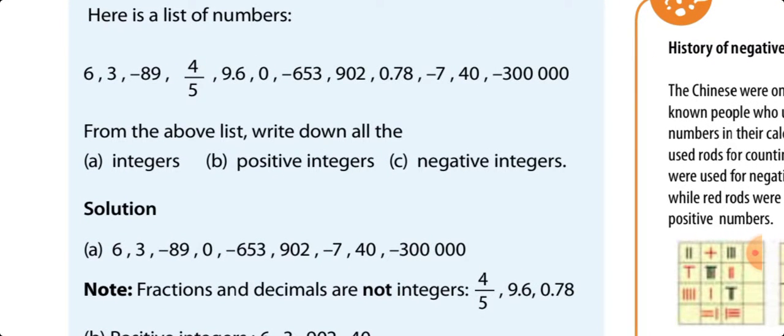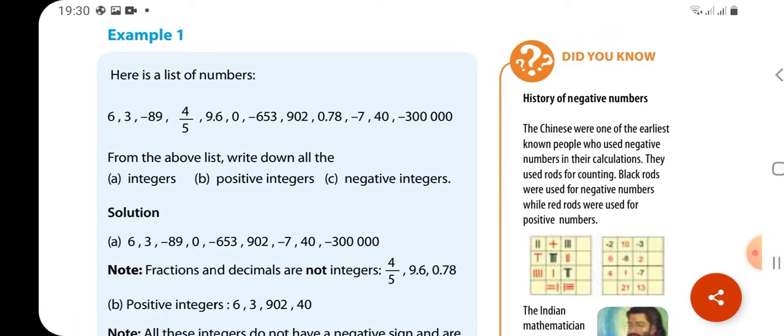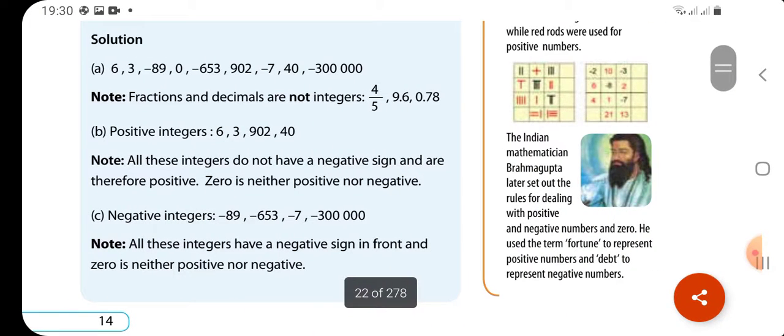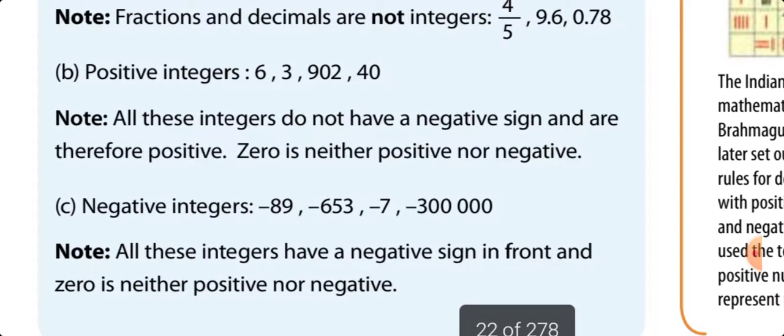The integers are 6, 3. Fractions are not integers. Decimals are not integers. The positive integers are 6, 3, 902, and 40. The negative parts are minus 89, minus 653, minus 7, minus 300,000. All these integers have the negative sign in front. And 0 is neither positive nor negative.